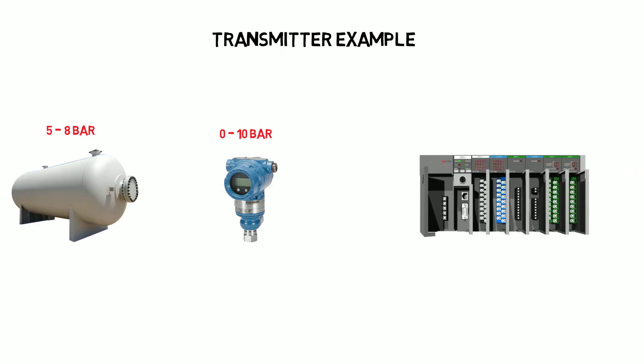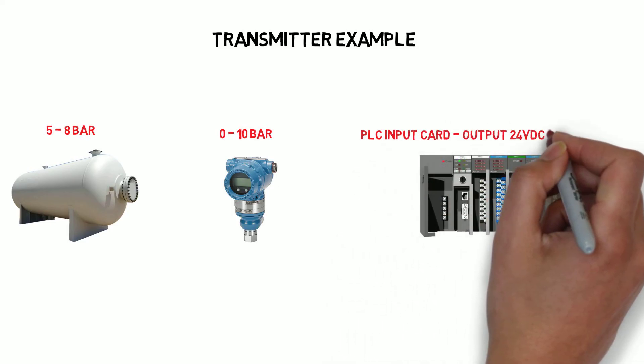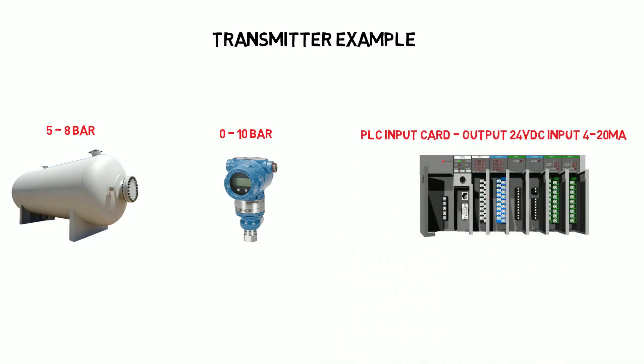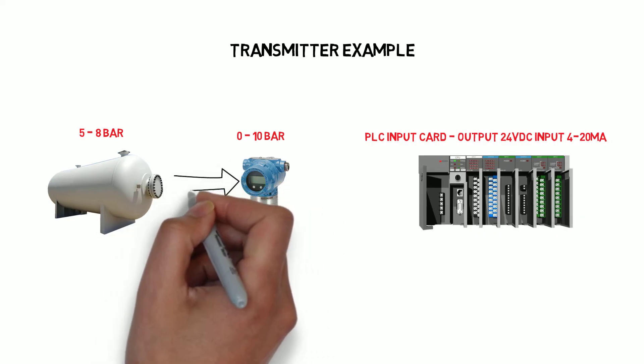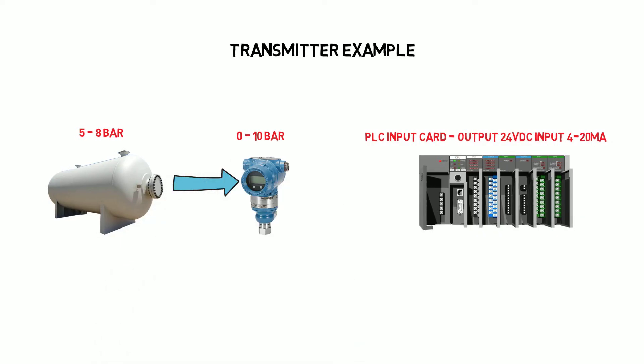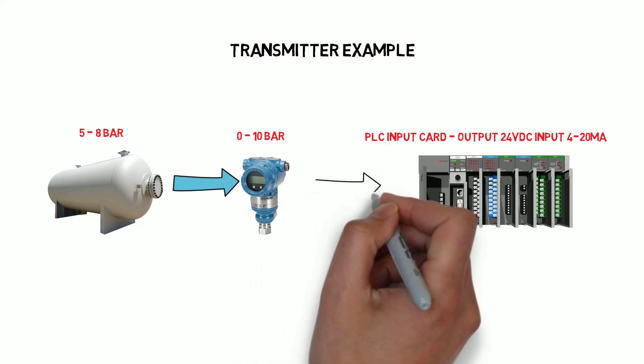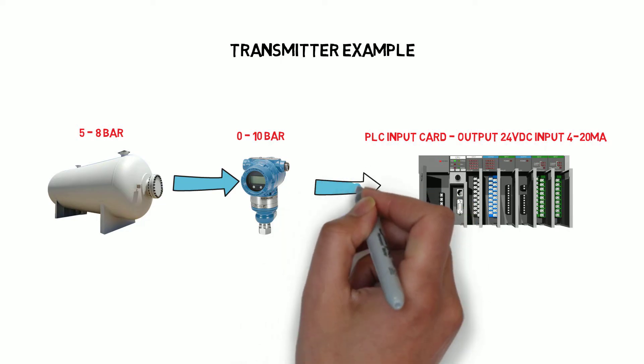The transmitter is connected to the PLC input card that is set up to output a voltage usually 24 volts DC and read a varying current input.